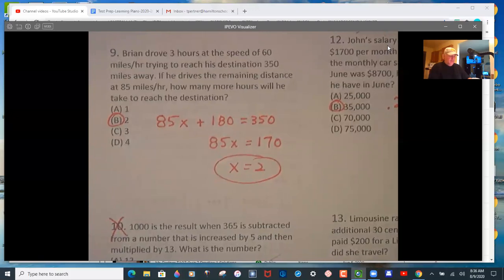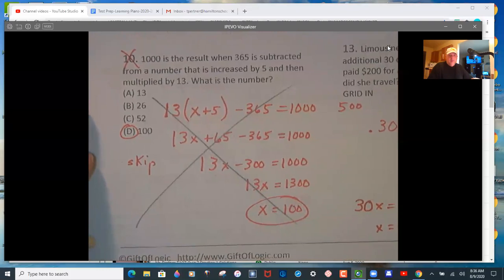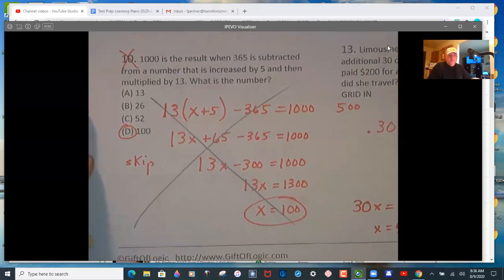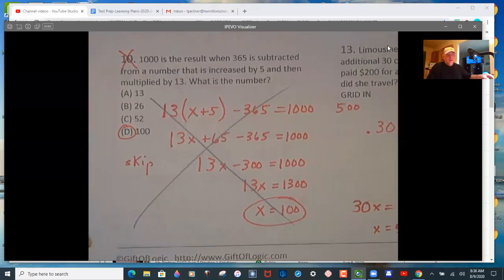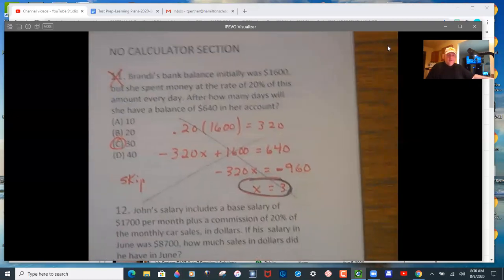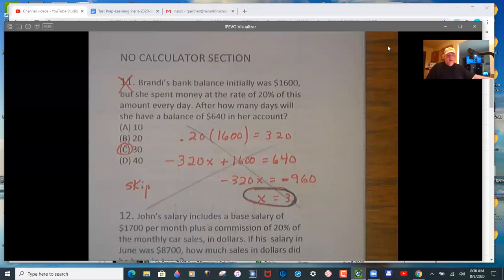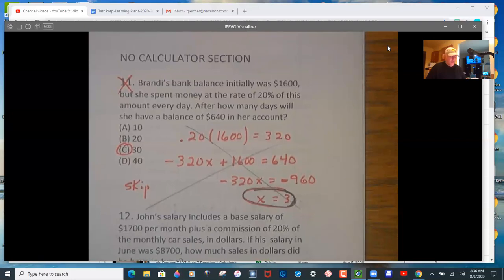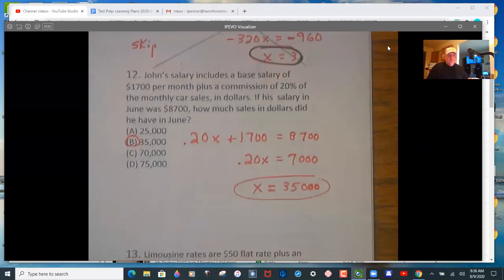So I'm going to have you skip problem 10. There's the work real quick, but it's a little bit confusing on what needs to be done. So that was a skip on the original. Then problem 11 is going to be a skip. There's the work. I just think it's confusing wording that you're not going to see.